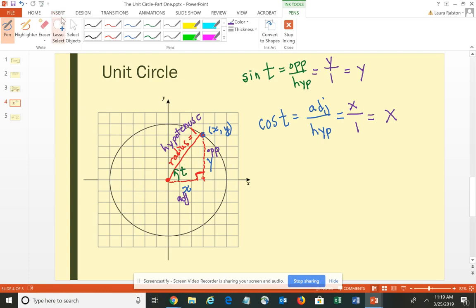So now our ordered pair, which we traditionally view as (x, y) in terms of our trig function can be written as the (cosine of the angle, sine of the angle). So our ordered pair (x, y) becomes (cosine, sine).